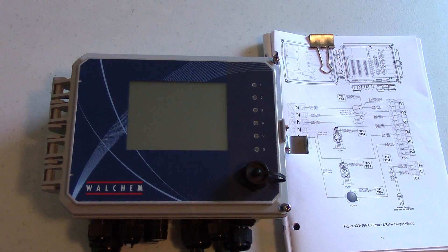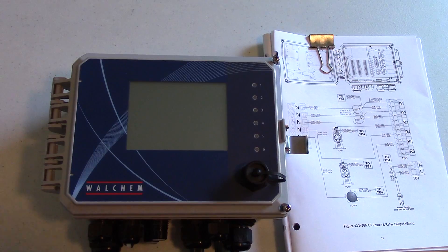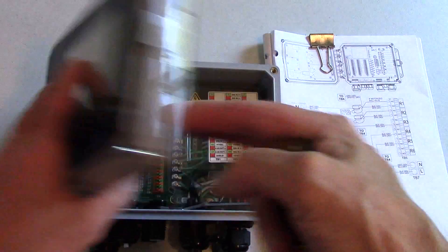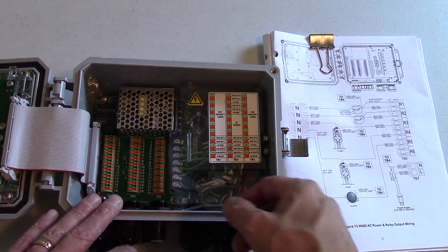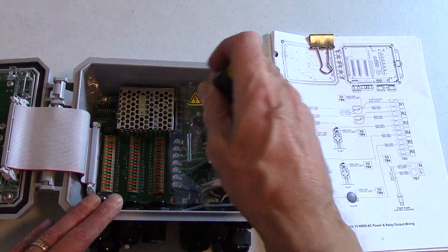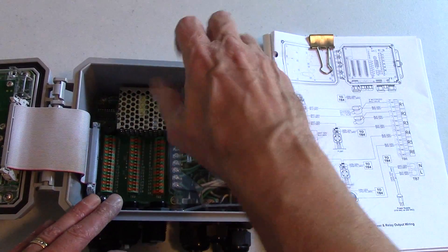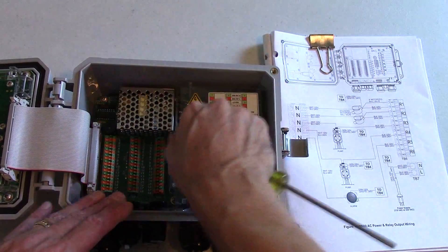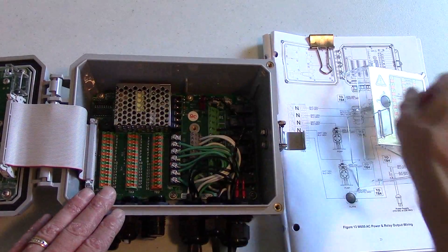Before doing any wiring on the controller, make sure the controller is powered down. Before you wire up any of the relays, you have to remove the plastic cover. There's a screw inside, you use your larger flathead screwdriver and you pull the cover right off.